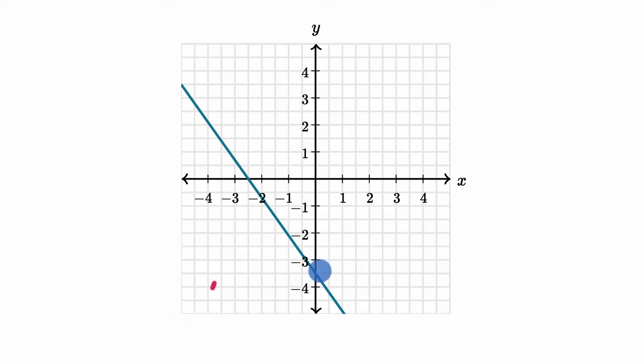Well, we're intersecting the y-axis right over there. That is the point. Well, x is going to be equal to zero because we are on the y-axis. And y looks like it is halfway between negative three and negative four. So it's negative 3.5. Or some people would say that the y-intercept is negative 3.5.